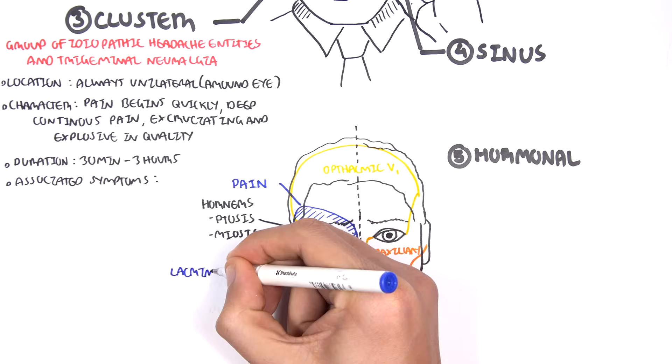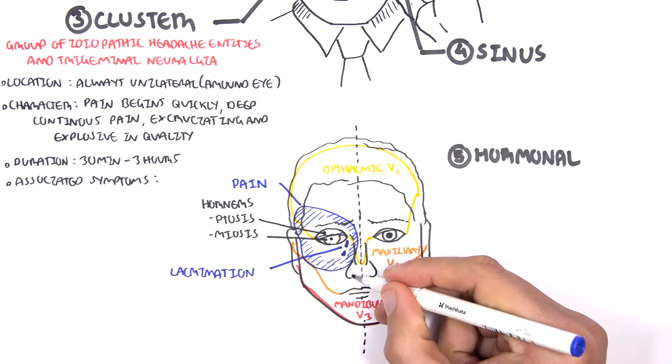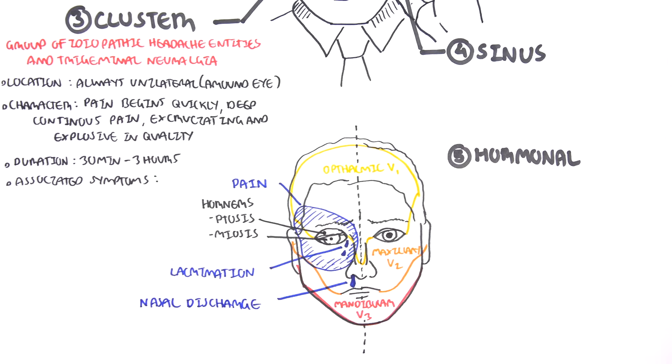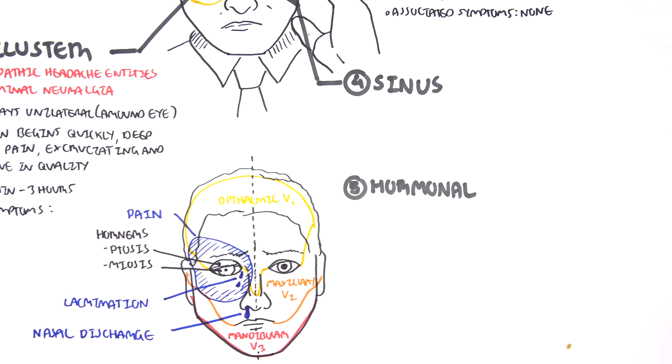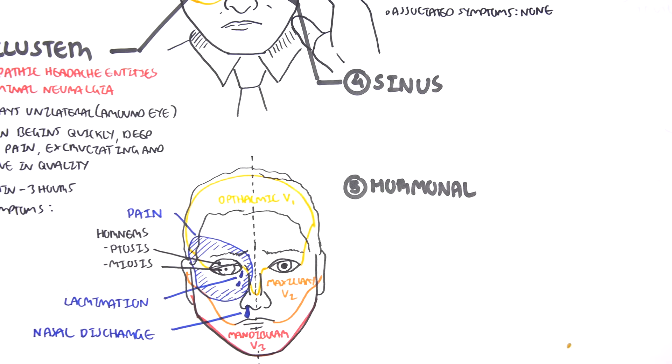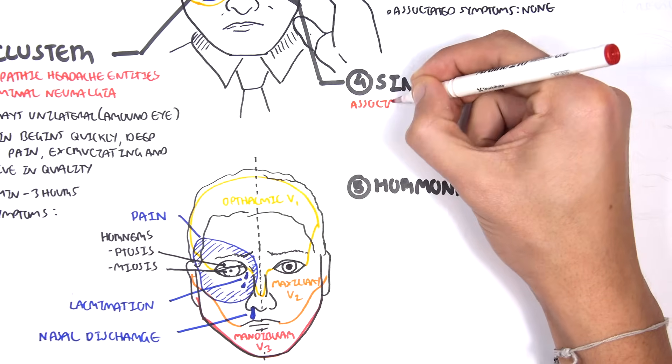You can also have lacrimation and nasal discharge. Essentially what I'm trying to portray here is that the cluster headache can have some associated symptoms involving the trigeminal nerve and other nerve problems, neuralgia problems. Hope that made sense.